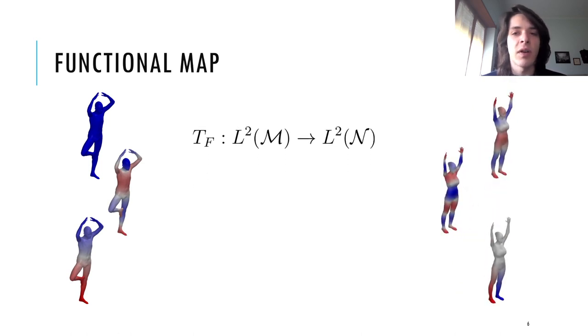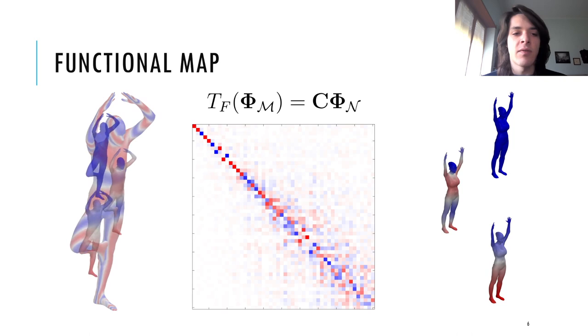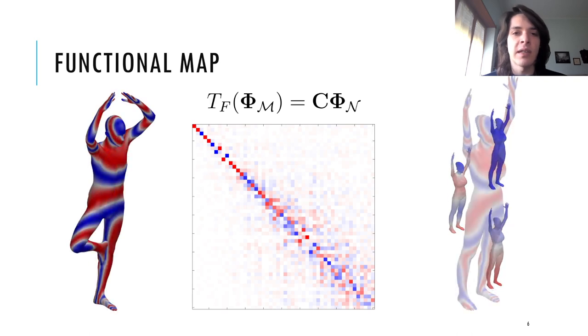If we are able to find some matrix C that maps the eigenfunctions from the source shape into linear combinations of eigenfunctions on the target shape, then transferring the signal is only a matter of reconstructing by using the same coefficients.